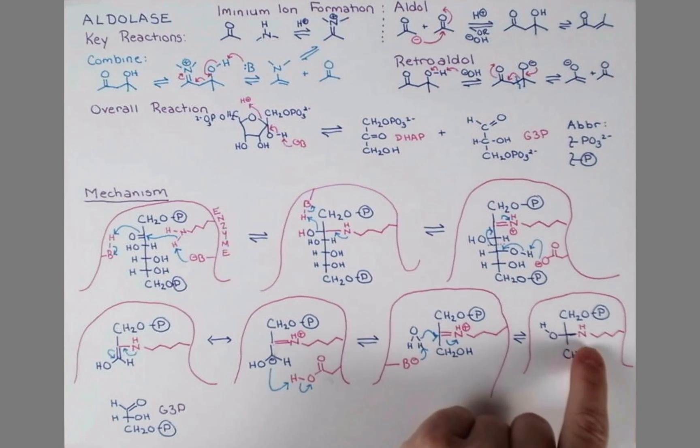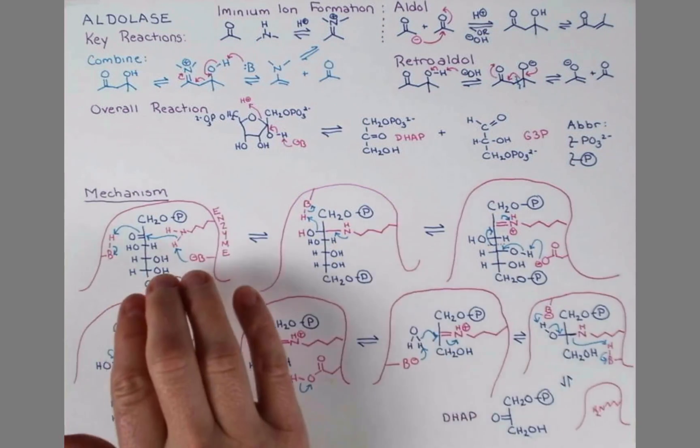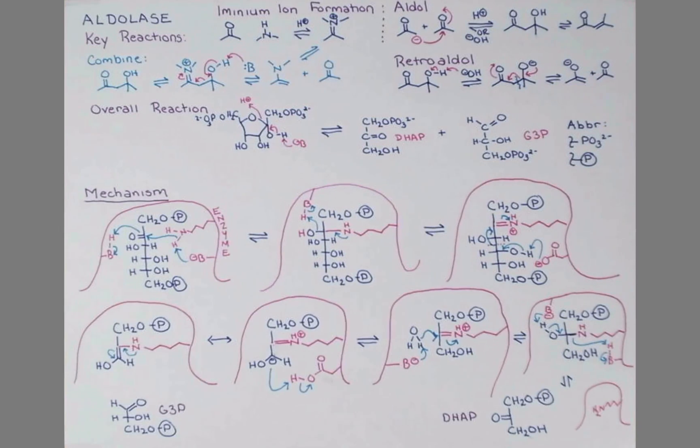Now all that's left to do is form a double bond here, kick off the lysine side chain so it's available to catalyze another reaction, and we're going to do that using basic and acidic enzyme residues again. Our proton acceptor deprotonates the OH. The carbonyl reforms, and the lysine side chain grabs a proton as it cleaves off of our DHAP molecule. And our lysine residue is now free and available to bond to another molecule of fructose 1,6-bisphosphate, promoting this reaction again and again.